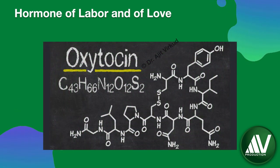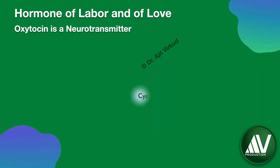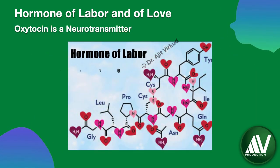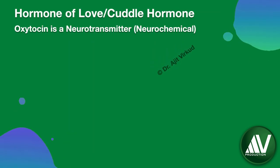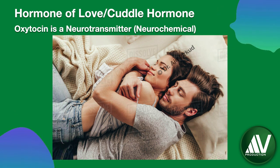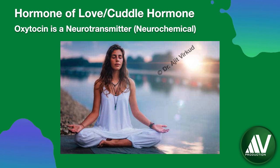Recent animal studies have shown that oxytocin also acts as a neurotransmitter — the hormone of labor is also the hormone of love. It is known as the cuddle hormone or the love hormone because it is released when people snuggle up, kiss, or bond socially. It is also greatly stimulated during sexual intercourse. Psychologically, oxytocin evokes a feeling of well-being and tranquility.